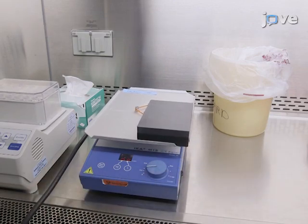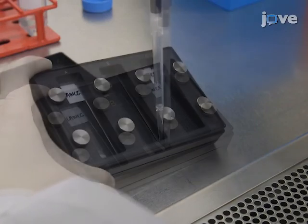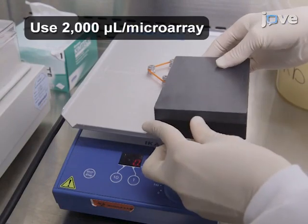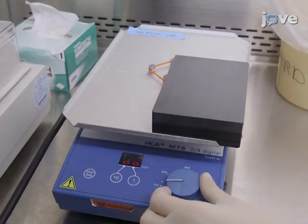Remove the standard buffer by aspirating with a pipette from the corner of the microarray chamber. Then block the microarray with the blocking buffer for 60 minutes at room temperature on an orbital shaker at 140 RPM.